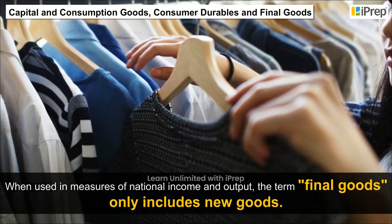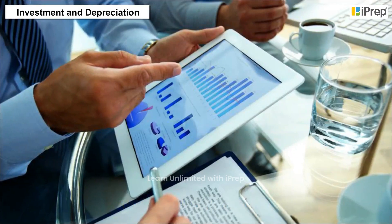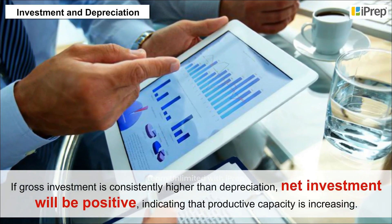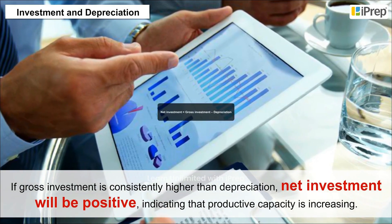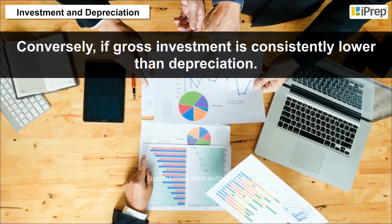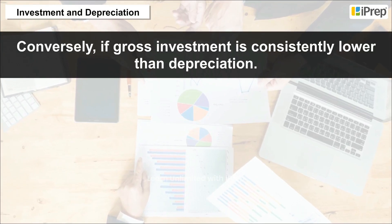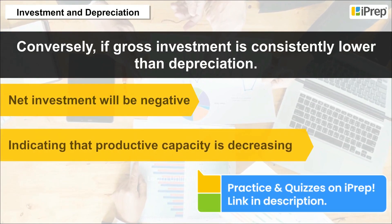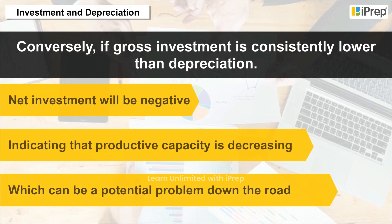When used in measures of national income and output, the term final goods only includes new goods. Regarding investment and depreciation: if gross investment is consistently higher than depreciation, net investment will be positive, indicating that productive capacity is increasing. Conversely, if gross investment is consistently lower than depreciation, net investment will be negative, indicating that productive capacity is decreasing, which can be a potential problem down the road.